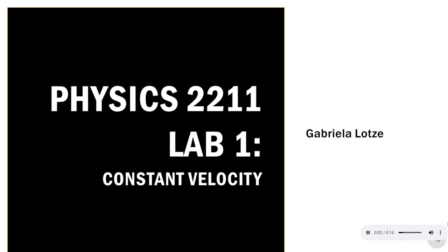Hello, my name is Gabriella Lozzi, and this video is going over Physics 2211 for Georgia Tech Lab 1 that examines constant velocity on a rolling object. For my experiment, I chose to use a tennis ball.